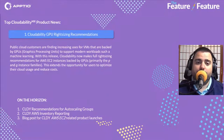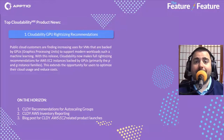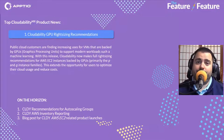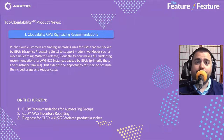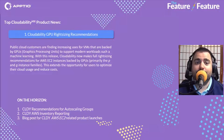For Cloudability, we have GPU rightsizing recommendations that have just come out. This makes rightsizing recommendations for EC2 instances backed by GPUs, factoring in GPU utilization as well as GPU memory utilization. It will either suggest another GPU-based instance or suggest one that doesn't have a GPU if you're not really utilizing that part of the EC2 instance you have provisioned.